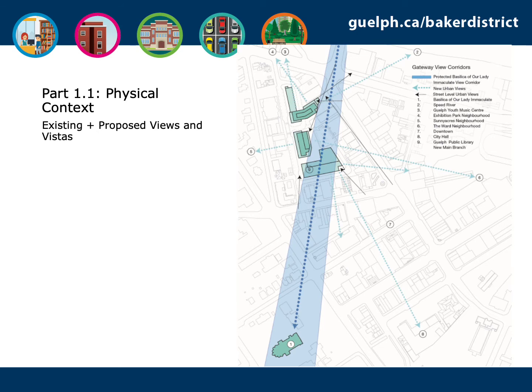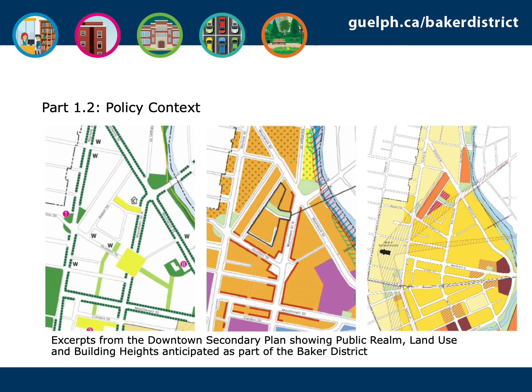Another important consideration regarding the site's existing context are the various existing and proposed views framed and supported by the redevelopment. Views important within the development include views to the new library from Quebec Street and St. George's Square, and views into the northern urban square from Wyndham Street. The view corridor to the Basilica of Our Lady Immaculate from Aramosa Road will be maintained and significantly influenced the form and massing of the development's buildings. With respect to the policy context, the Baker District Redevelopment will be guided by the City of Guelph's applicable policy and guidelines, including the Official Plan, Downtown Guelph Secondary Plan, Urban Design Manual, and Downtown Streetscape Manual and Built Form Standards.